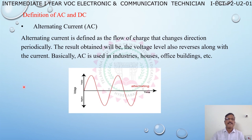Definition of AC and DC. Alternating current, AC: alternating current is defined as the flow of charge that changes direction periodically. The result is that the voltage level also reverses along with the current. AC is used in industries, houses, office buildings, etc.